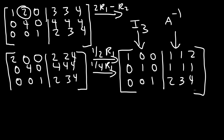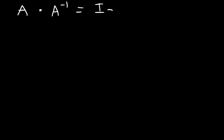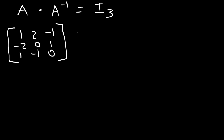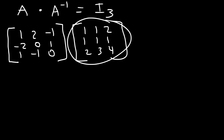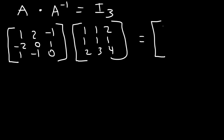To confirm that it's indeed the inverse, what we need to do is multiply matrix A by the inverse of A and show that it equals I3. So we need to take matrix A — which was 1, 2, negative 1, negative 2, 0, 1, 1, negative 1, 0 — and multiply it by the inverse, which is 1, 1, 2, 1, 1, 1, 2, 3, 4. If we did it correctly, we should get 1, 0, 0, 0, 1, 0, 0, 0, 1.